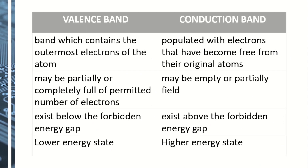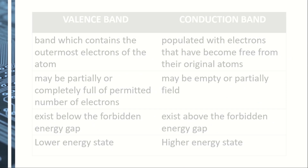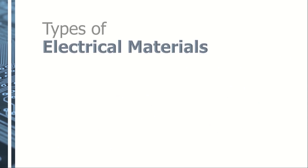Just to recap: the valence band is the band which contains the outermost electrons of the atom, while the conduction band contains the electrons that have become free from their original atoms. The valence band may be fully or partially filled with the permitted number of electrons, while the conduction band may be empty or partially filled. The valence band is located below the forbidden energy gap, while the conduction band is above it. The valence band is in a lower energy state, while the conduction band is in a comparatively higher energy state. The ability of electrons to jump from the valence band to the conduction band depends on the type of material, and therefore materials can be categorized according to their ability to conduct electricity.